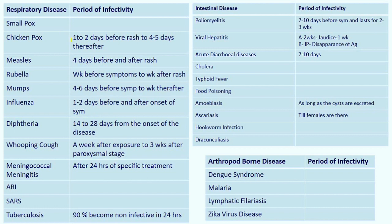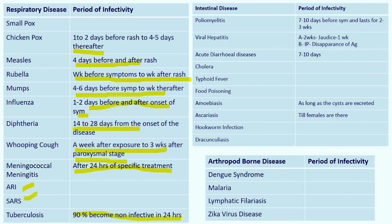Period of infectivity for respiratory diseases: Chickenpox — one to two days before the rash to four to five days thereafter. Measles — four days before and after the rash. Rubella — a week before symptoms to a week after the rash. Mumps — four to six days before symptoms to a week thereafter. Influenza — one to two days before and after onset of symptoms. Diphtheria — four to 28 days from onset. Whooping cough — a week after exposure to three weeks after the paroxysmal stage. Meningococcal meningitis — after 24 hours of specific treatment, the patient becomes non-infective. For tuberculosis, 90% of patients become non-infective within 24 hours of ATT.